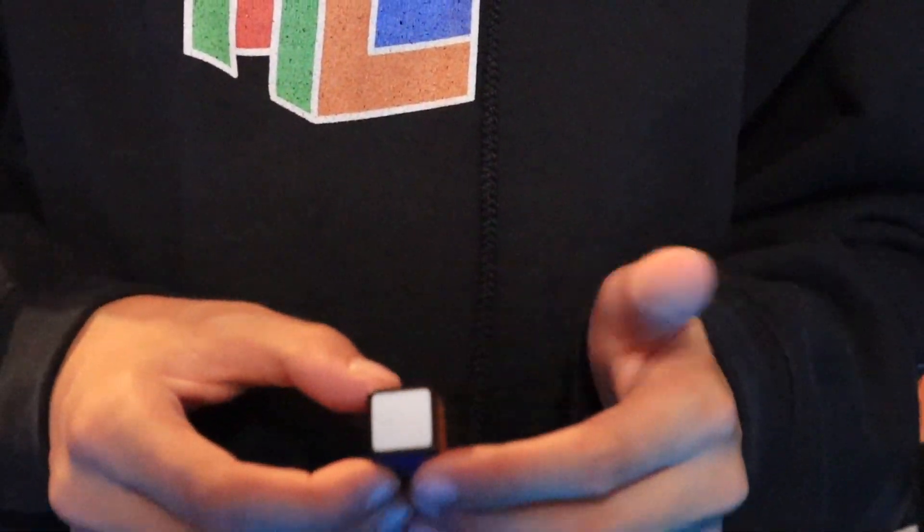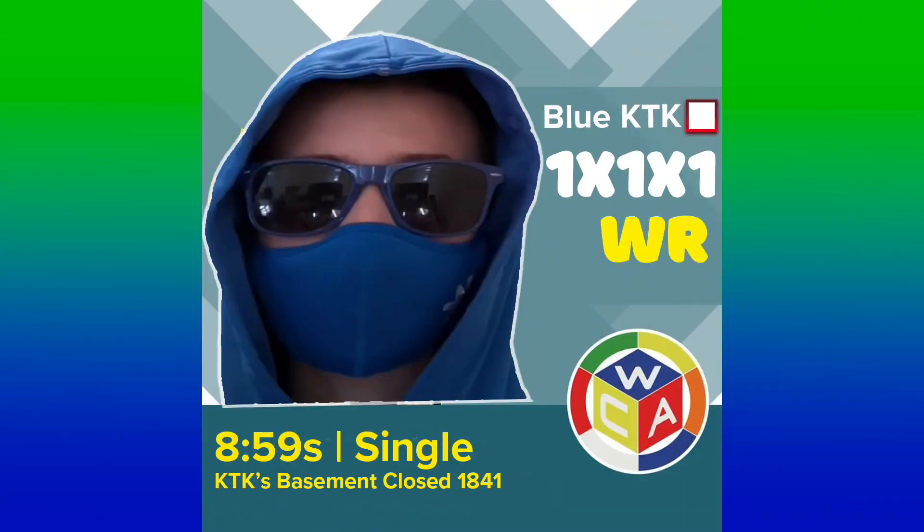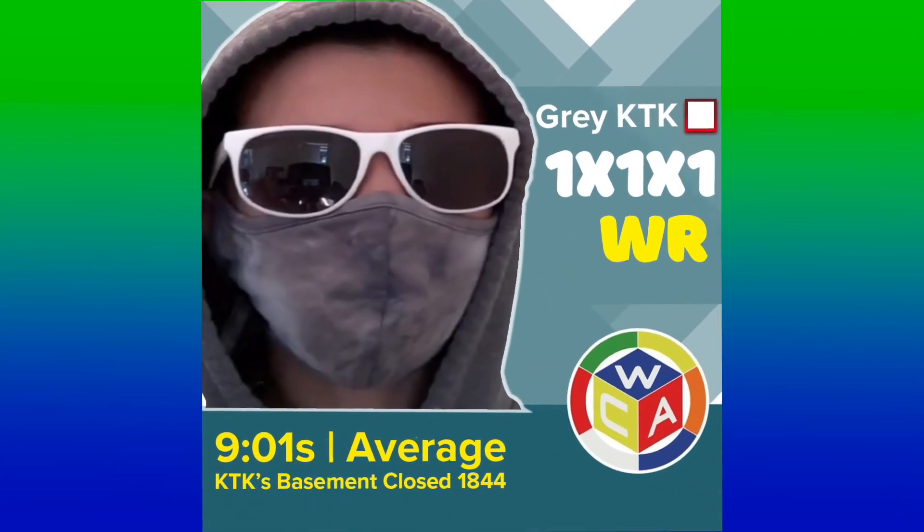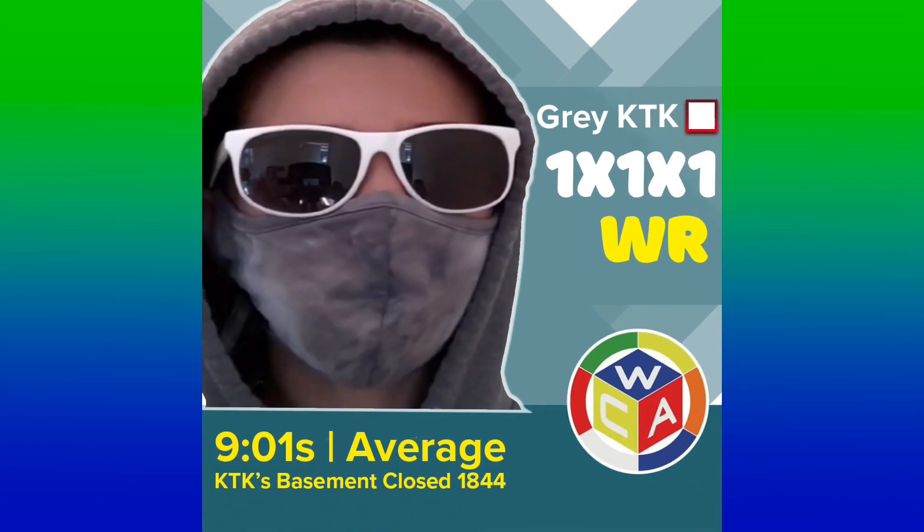However, with some practice, you can get good, like these Pro Cubers, Gray KTK and Blue KTK. You can see these handsome young men hold the world records in 1x1. Blue KTK has an 859 single, and Gray KTK has a 901 average. But the 1x1 is actually harder than it looks.